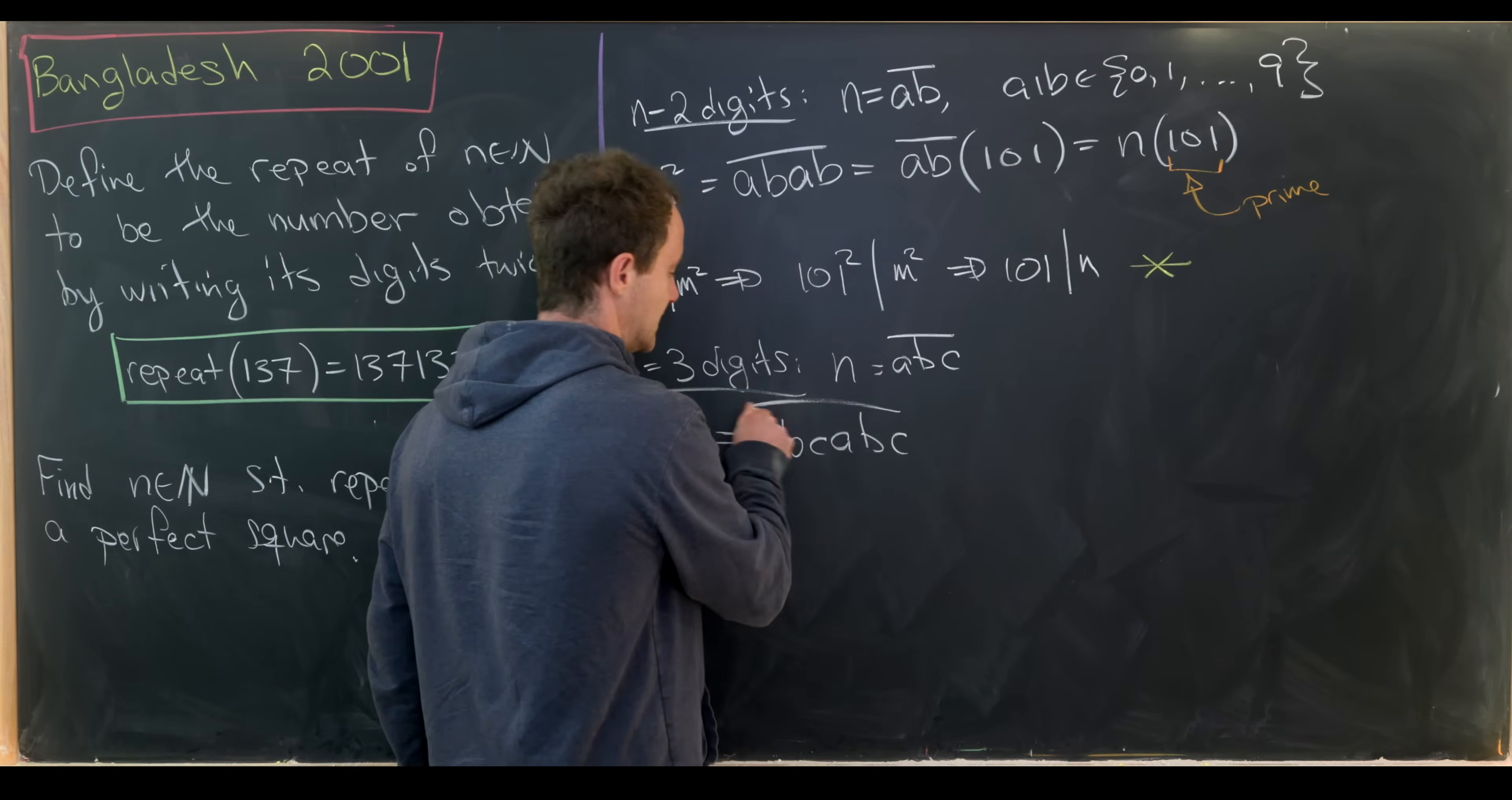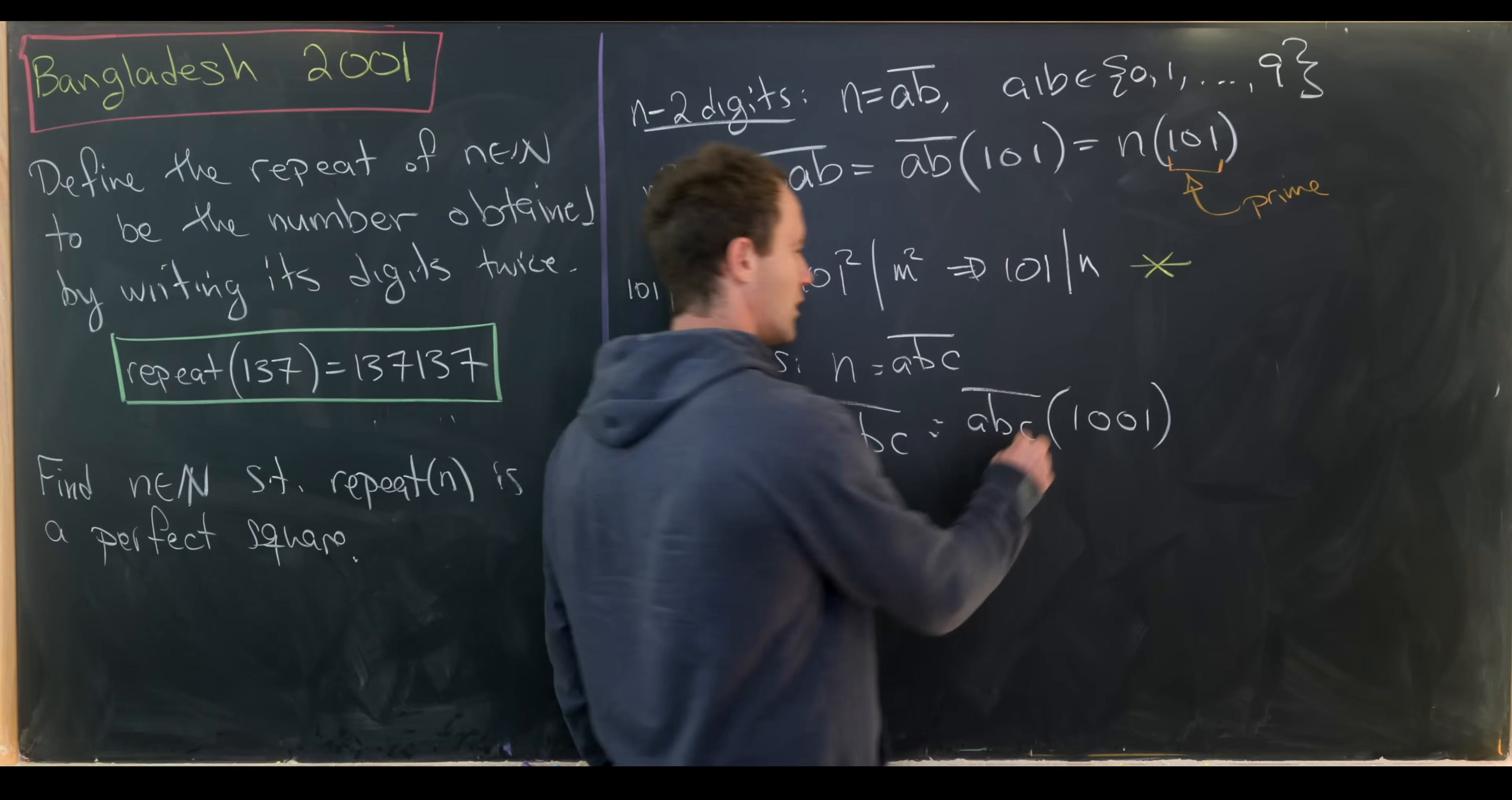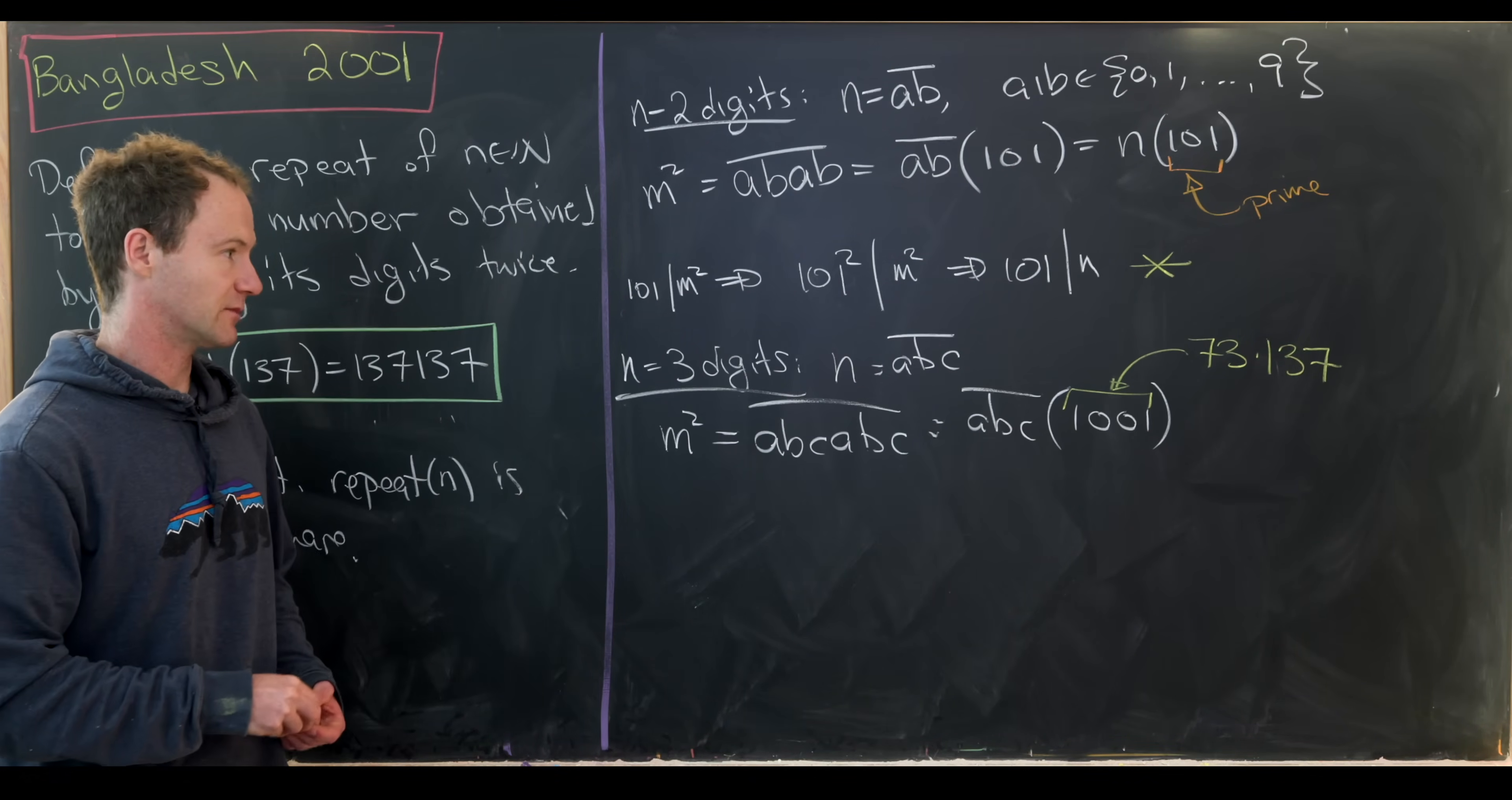And then we would need m squared to be equal to a, b, c, a, b, c, which is equal to abc times 1001. And now this 1001 is no longer prime. You can check pretty easily that this is equal to 73 times 137. So those are the two prime numbers.